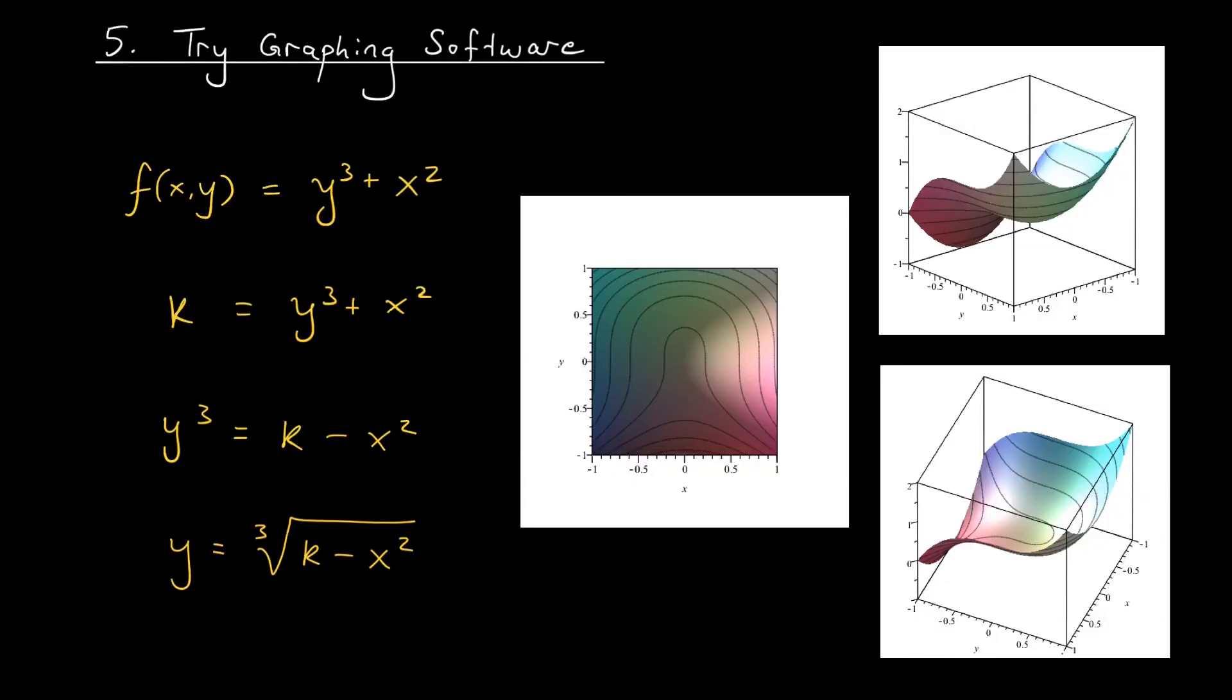Finally, it's entirely possible that you encounter a function that's a little bit too complicated to recognize its level curves easily. In that case, graphing software can be very helpful to you. Take for example, this function f(x,y) = y³ + x². My strategy for understanding the level curves of this function would be to first set z equal to k, and then try to rewrite this with y as a function of x. If you do that, you're going to get that y is the cube root of k - x². And I don't really have a good sense of what those level curves would look like. So I decided to ask the computer for help.